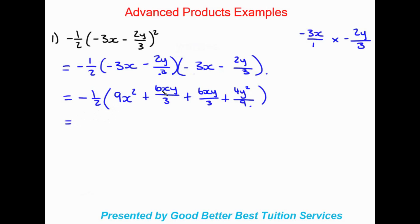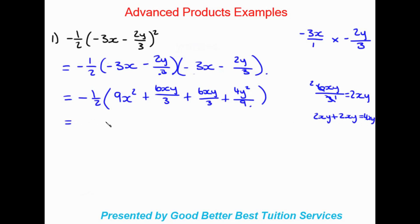Before moving on, let's look at 6xy over 3 — that's not in its simplest form. Simplifying: 3 goes into 6 twice, so we're left with 2xy. We have 2xy plus 2xy, which gives us 4xy. So we can write: negative one half times the bracket 9x squared plus 4xy plus 4y squared.